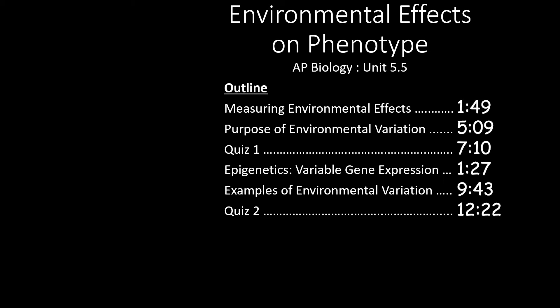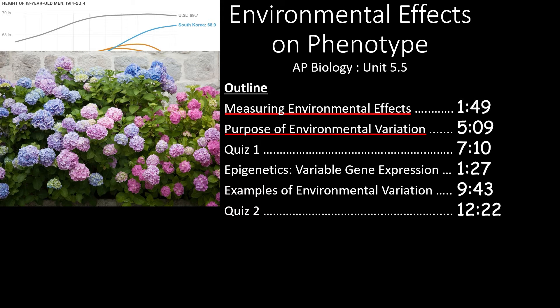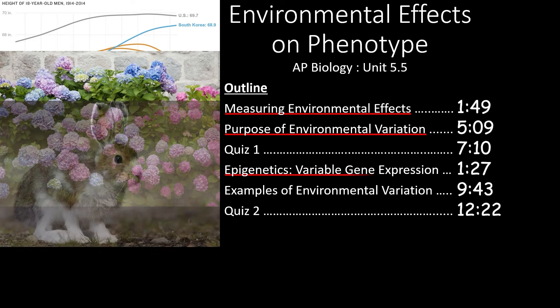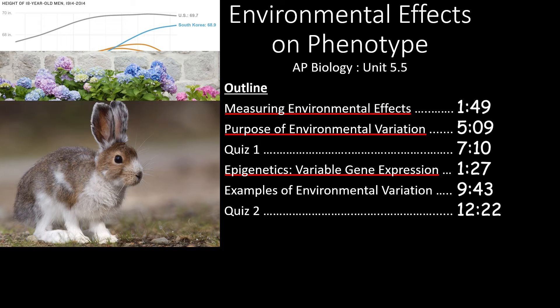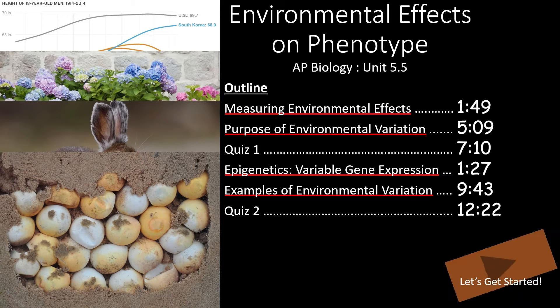In this video, we're going to take a look at Unit 5.5 of the AP Biology Curriculum. We'll start by seeing how we can measure environmental effects. Then, we'll see how some variations have a clear evolutionary purpose while others are simply coincidental. After the first quiz, we'll define epigenetics and see how gene expression can change due to environmental inputs. We'll spend some time at the end of the video going over some extra examples of environmental variation.